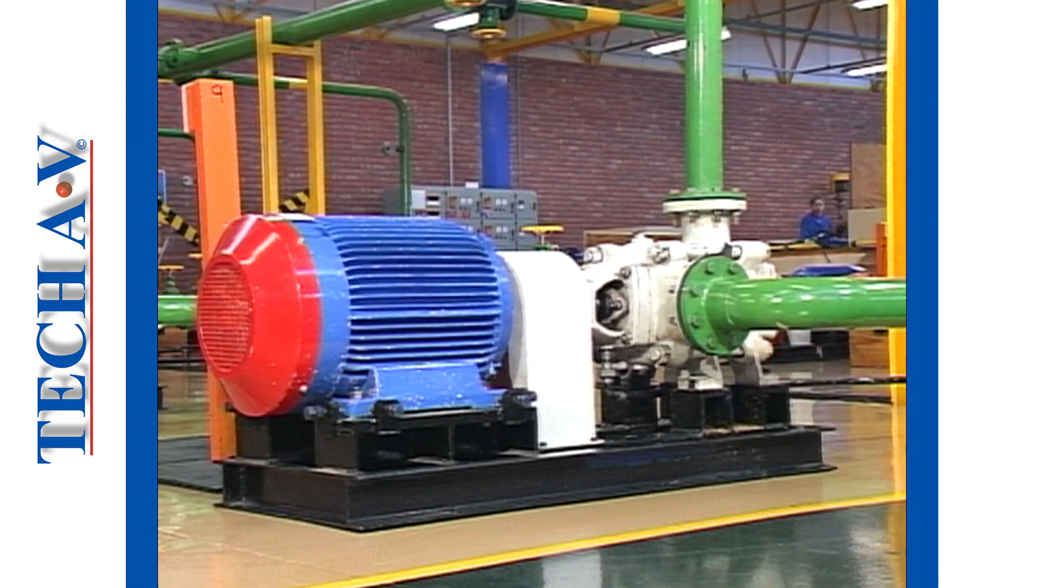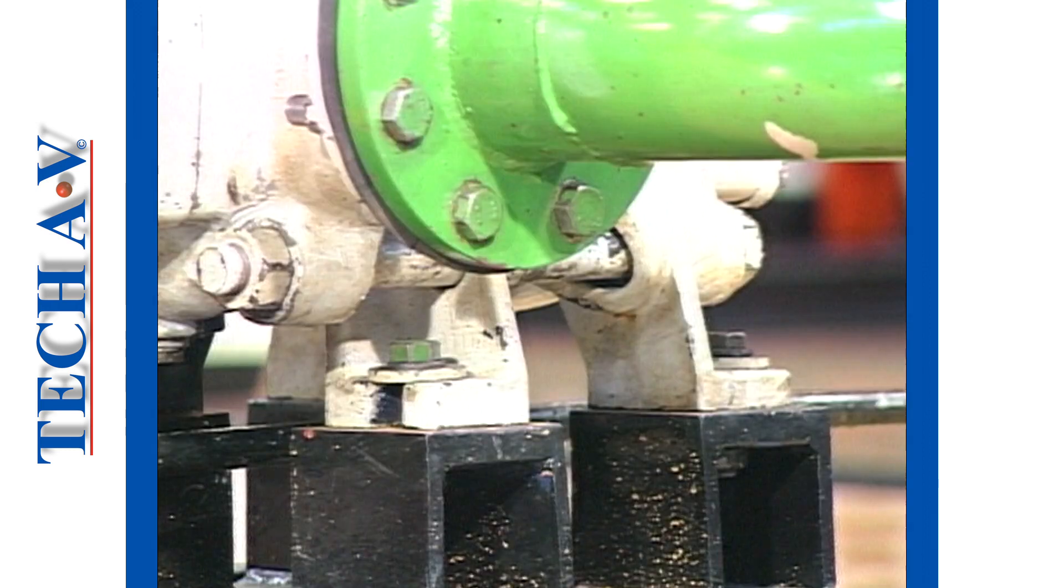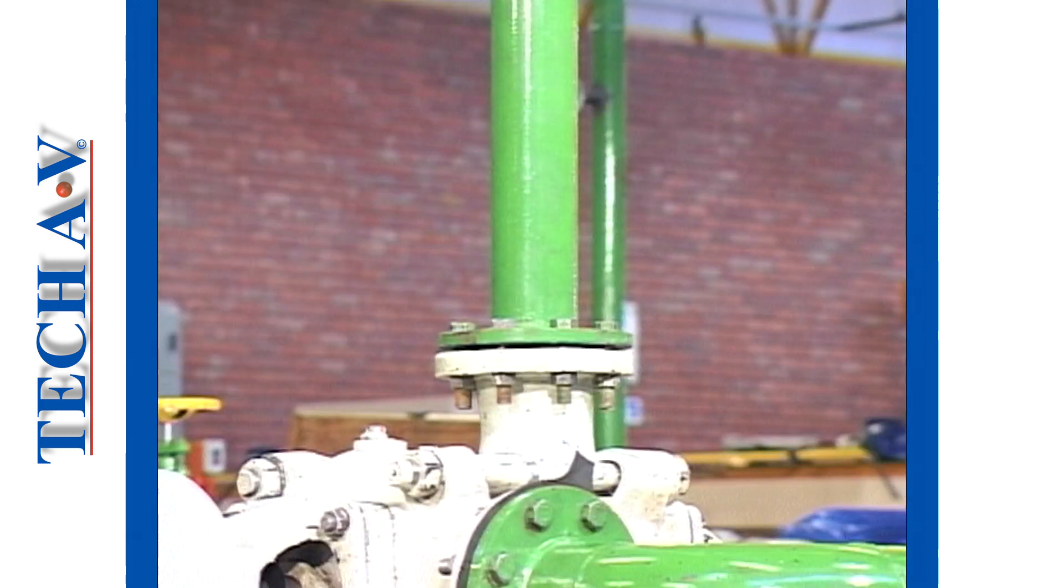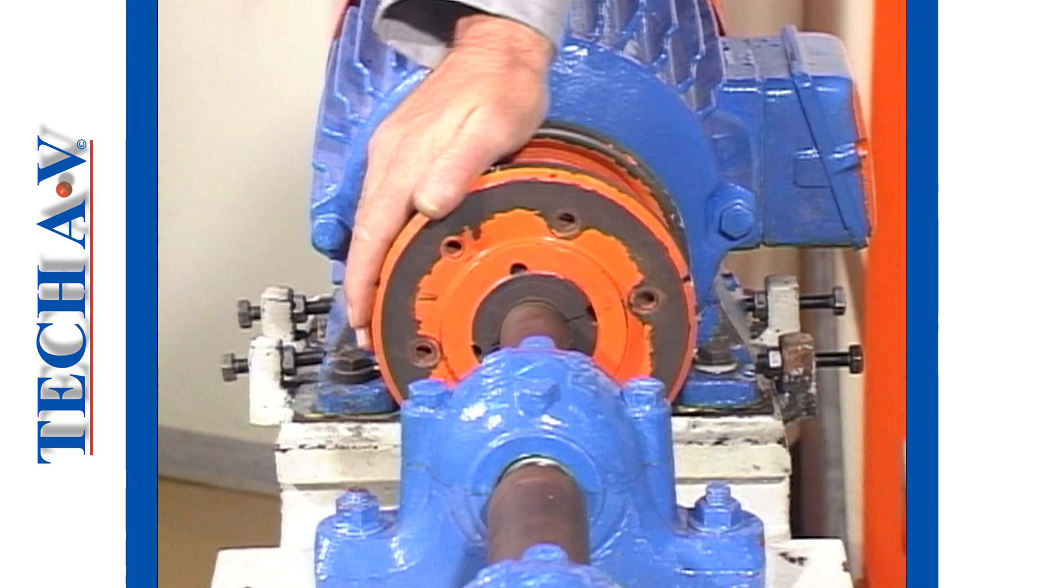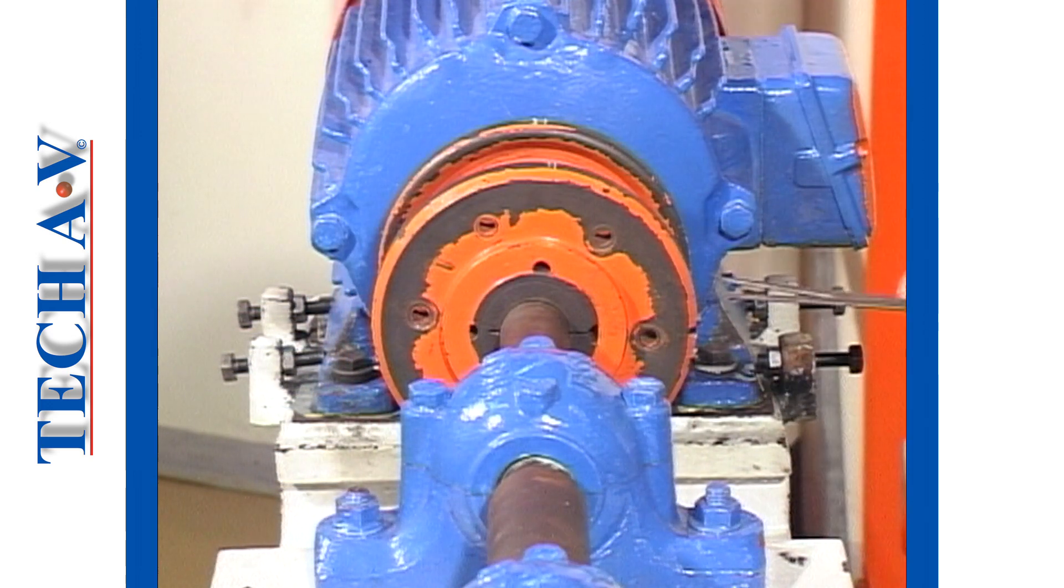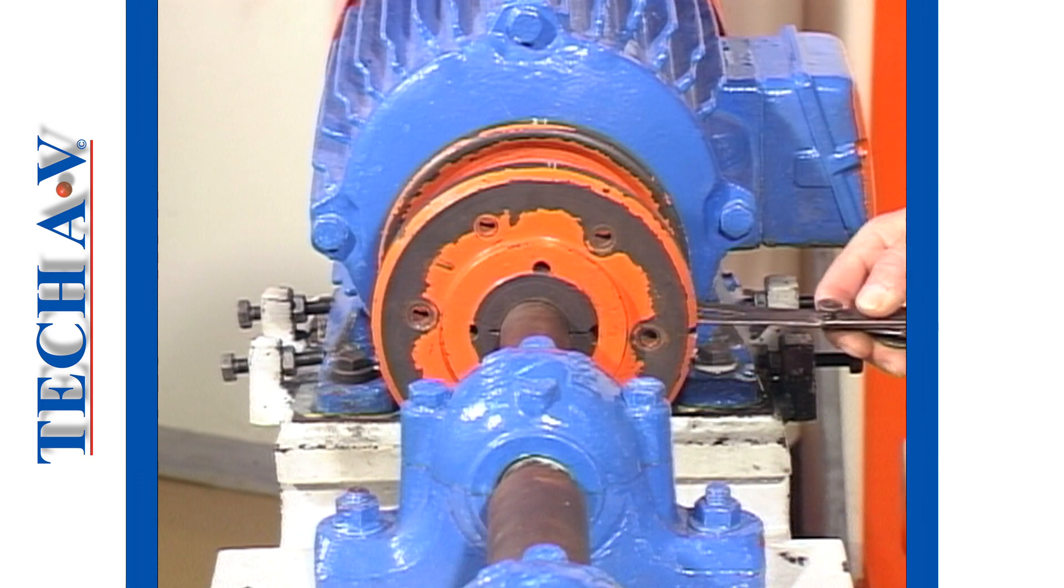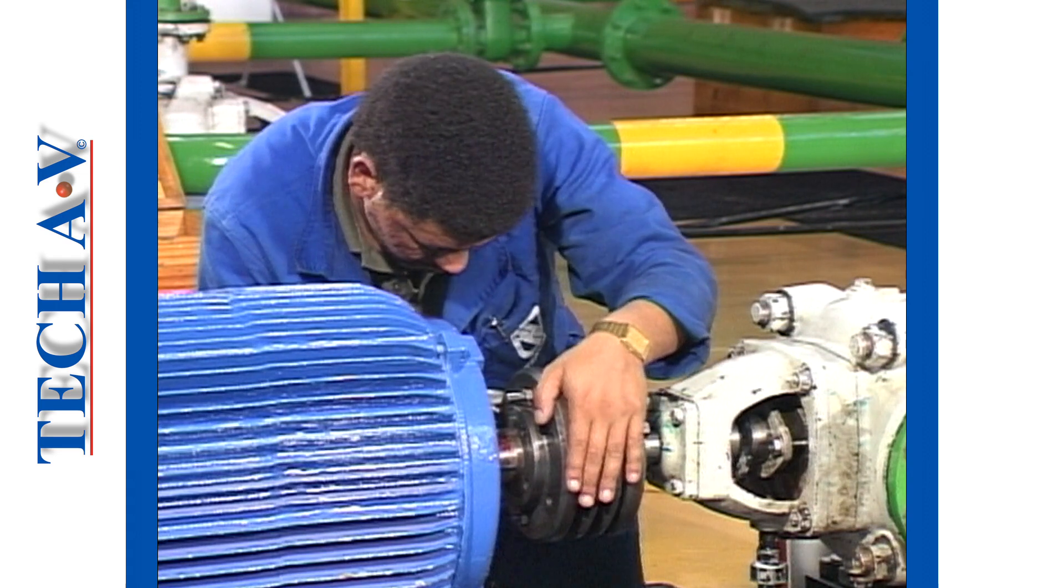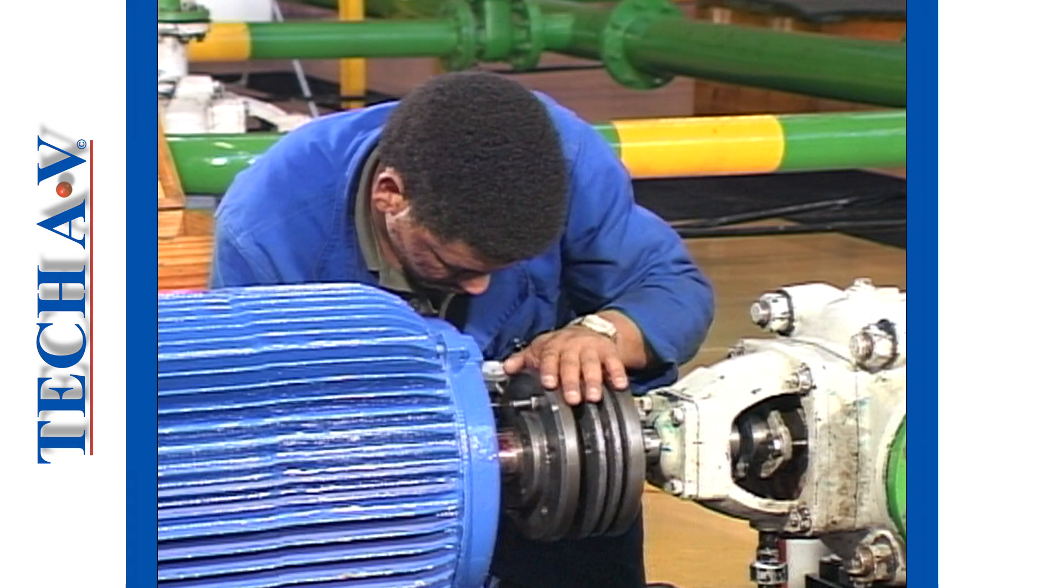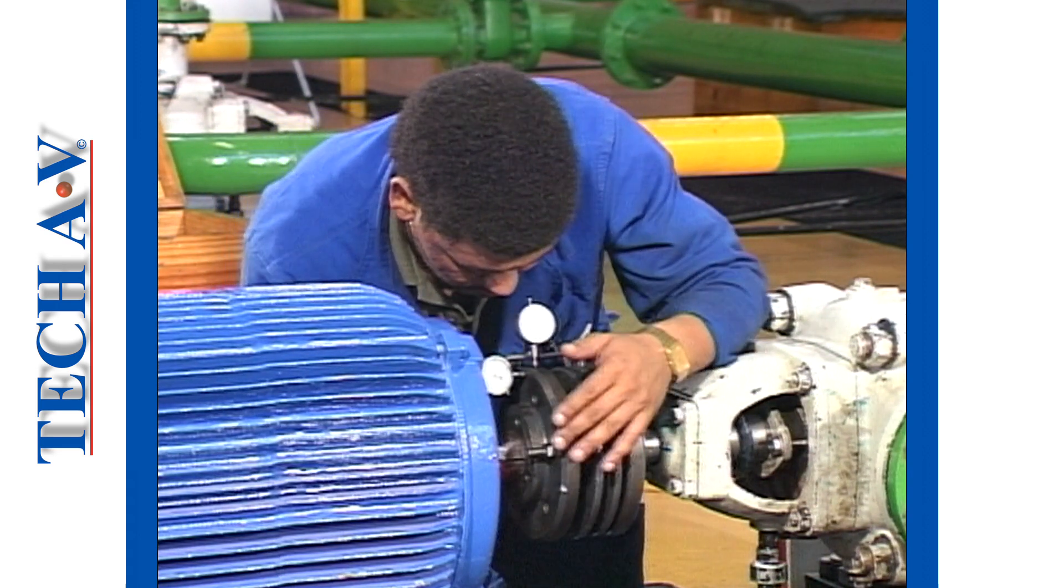During normal operation, a motor or a driven unit may move slightly due to factors such as base settling, pipework strain, or even wear in the bearings. For this reason, it is extremely important that a coupling, even a flexible coupling, must be aligned as perfectly as possible initially, so as to be able to cope with running errors or shifts.